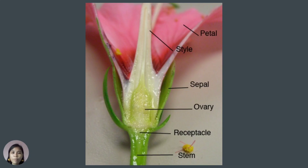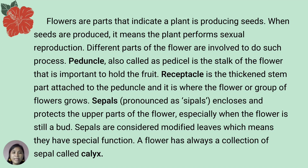Let us look at the real gumamela flower and its parts. Flowers are parts that indicate a plant is producing seeds; when seeds are produced, it means the plant performs sexual reproduction. The pedicel is the stalk of the flower that is important to hold the fruit. The receptacle is the thickened stem part attached to the pedicel where the flower or group of flowers grows. Sepals enclose and protect the upper parts of the flower, especially when the flower is still a bud. Sepals are considered modified leaves, which means they have a special function. A flower also has a collection of sepals called the calyx.